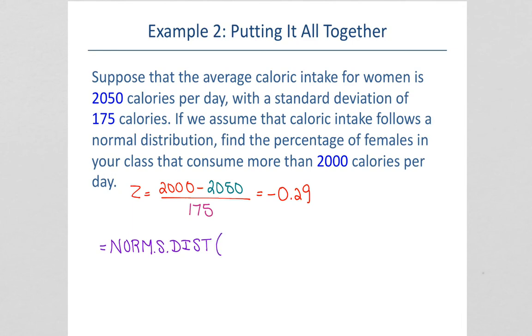Then you put in your z-score. In this case, negative 0.29. Anytime you need to find a percentile, you're going to use this right here. But in our particular case, it's negative 0.29. And then, we type true. Comma, true.